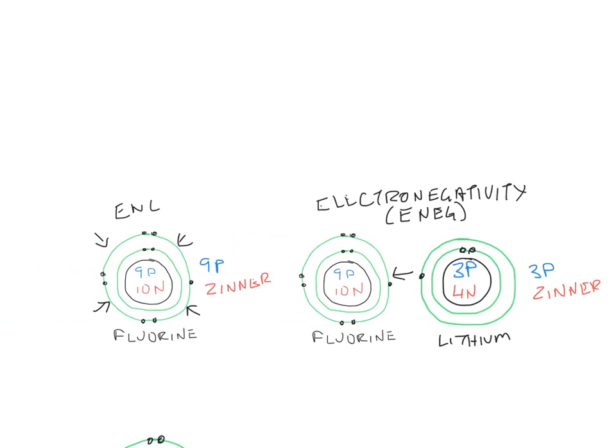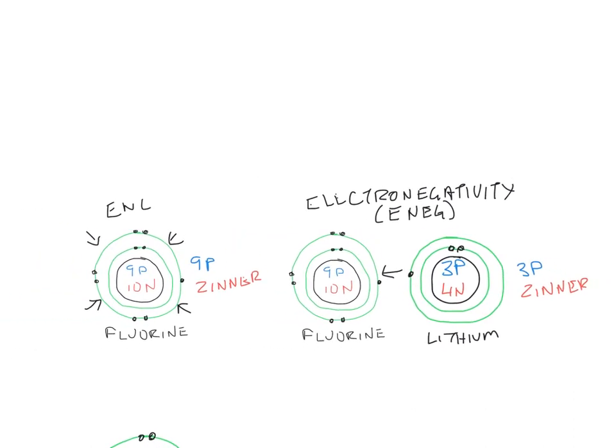So fluorine's high electronegativity says that it has a large ability to attract lithium's electrons towards it. So that's the distinction between these two related properties. Effective nuclear charge is attraction for their own valence electrons. Electronegativity is attraction for other atoms' valence electrons. This is one of my most missed questions on the matching. We have to match the definition with the property because they're both about attracting electrons. It's just the difference of attraction for their own versus attraction for other atoms.